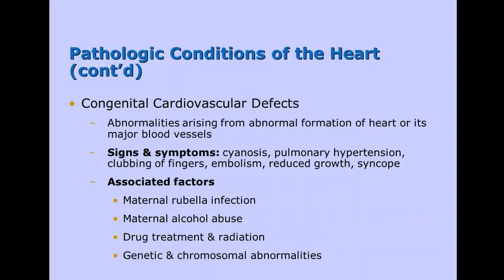We can also have congenital cardiovascular defects that you're born with. These are abnormalities that arise from abnormal formation of the heart or its major blood vessels. Some of the signs and symptoms include cyanosis, which is the bluish-colored skin; pulmonary hypertension, which is high blood pressure; clubbing of the fingers; embolism, which is a blood clot; reduced growth; and syncope or fainting.